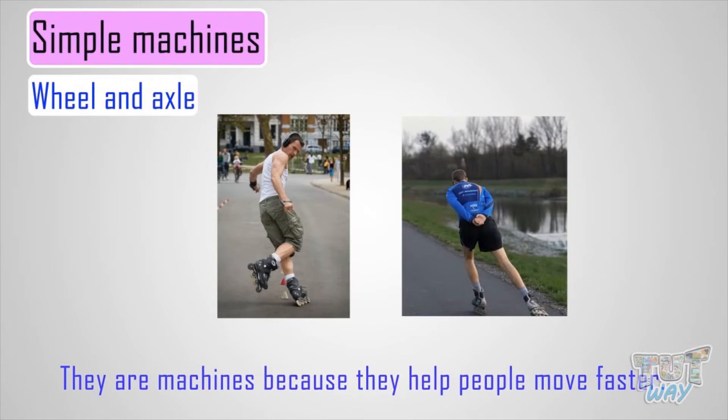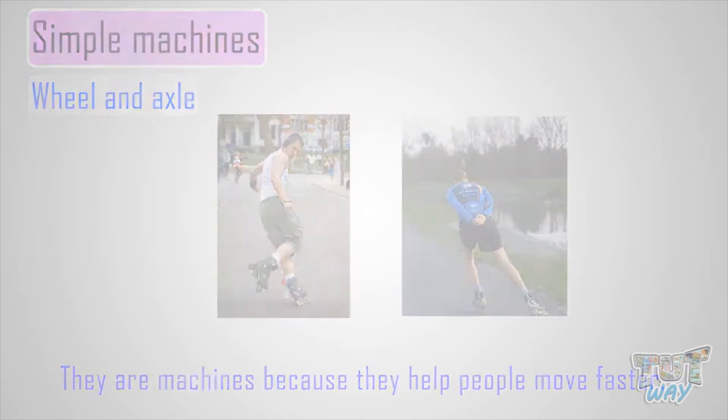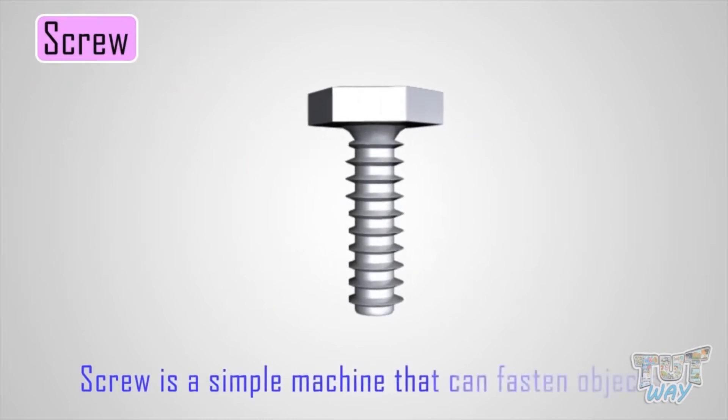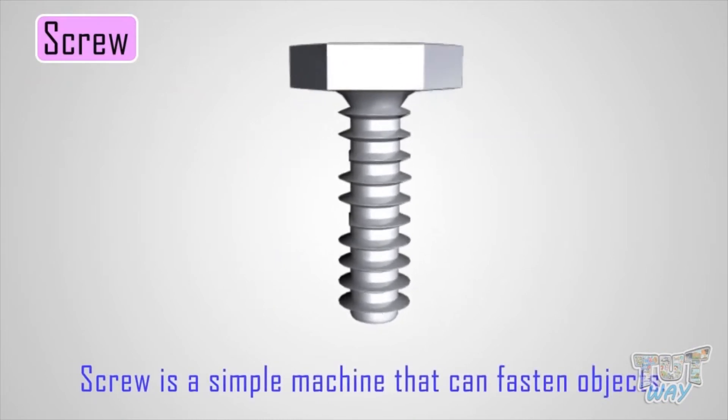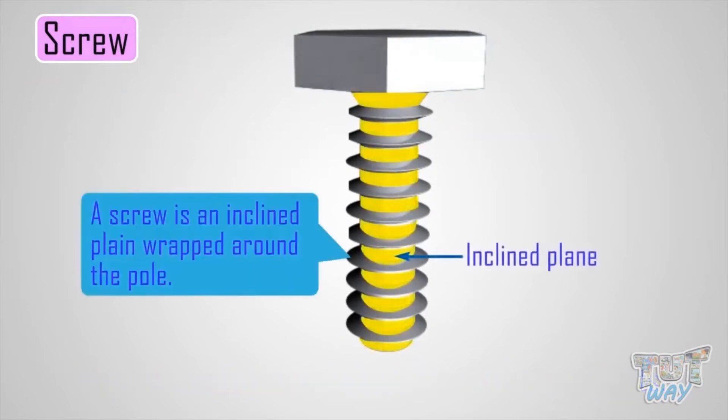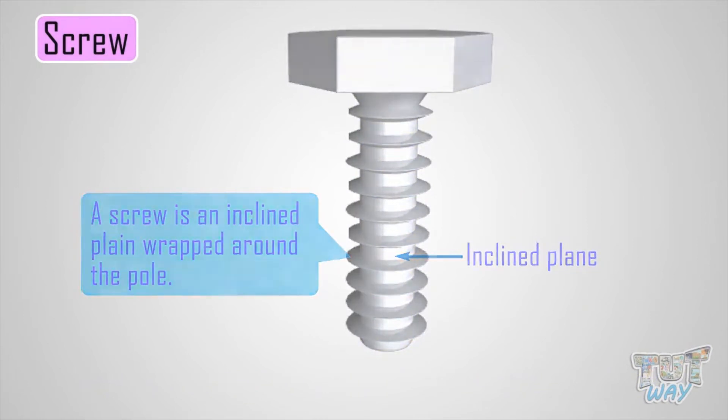Now let's learn another simple machine which is a screw. A screw is a simple machine that can fasten objects. A screw is an inclined plane wrapped around a pole which holds things together or lifts materials.